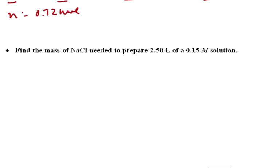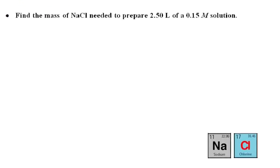Okay, our third equation. Find the mass of NaCl needed to prepare 2.5 liters of a 0.15 molar solution. So we know that we have a volume, which is 2.50 liters, and we have a molarity, which is 0.15 molar. So the only variable we have left is the number of moles. That's what we're going to be able to calculate.